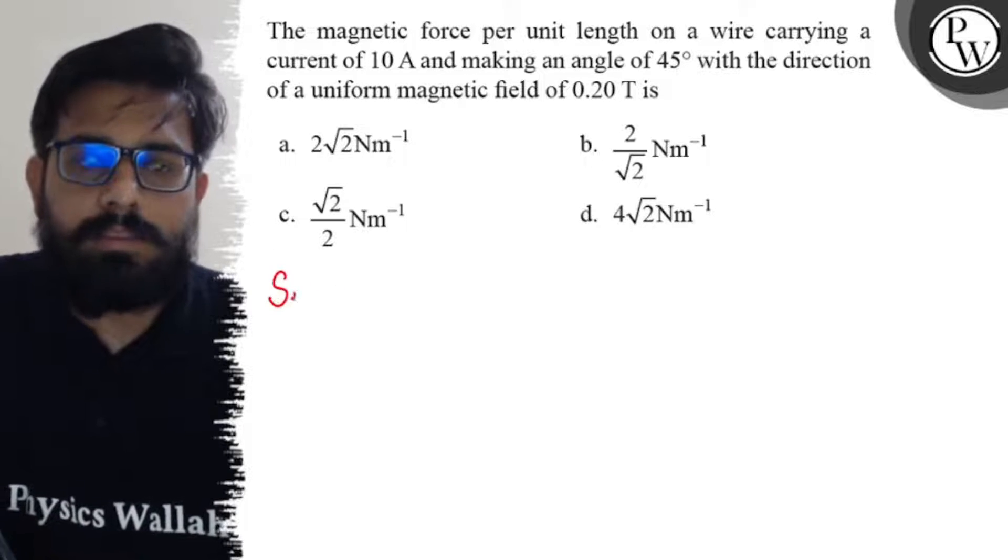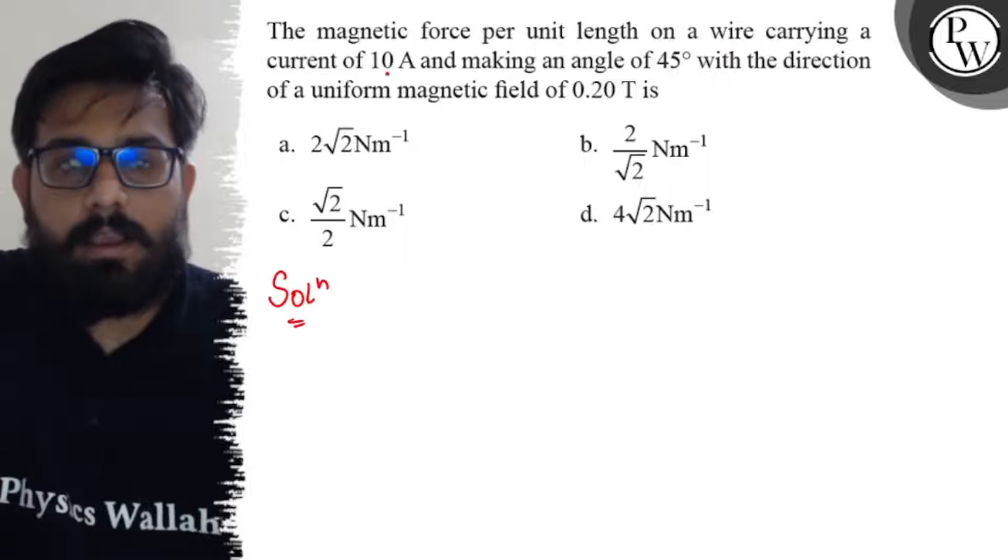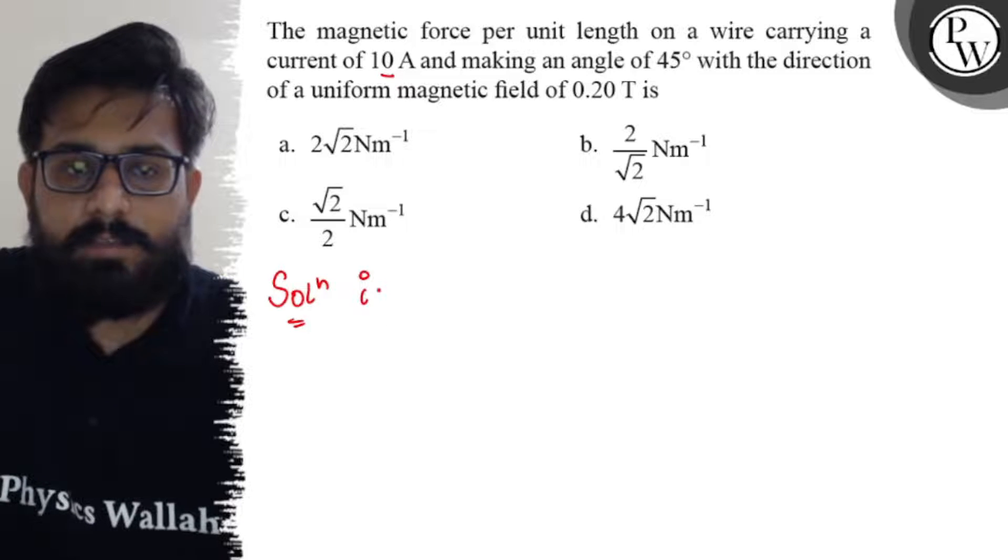So here in this question, as you can see, the magnetic force per unit length on a wire carrying a current of 10 ampere, so the value of current is given as 10 ampere.